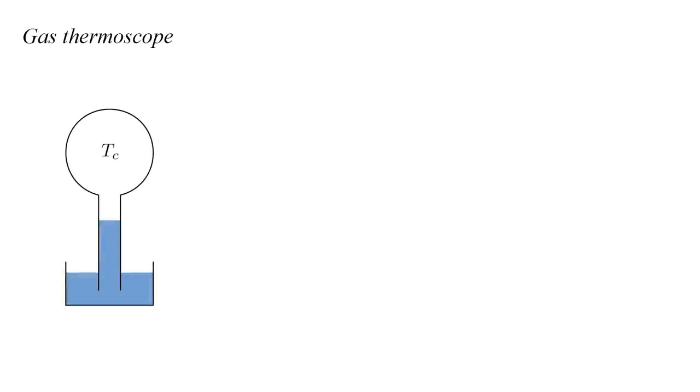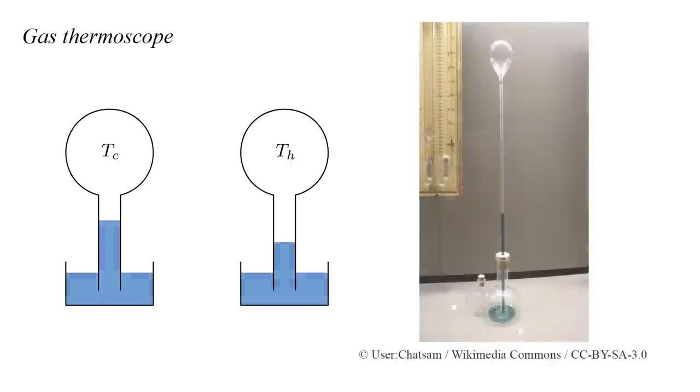A glass bulb containing a gas had a long thin neck, which is inserted into an open volume of water. As the temperature changes, the enclosed gas expands or contracts. This causes the water level in the neck to rise or fall. A high level indicates a low temperature, and a low level a high temperature.